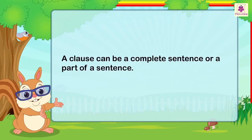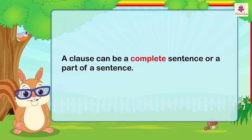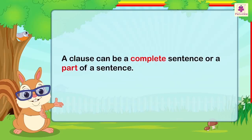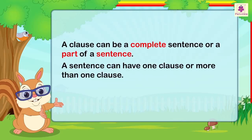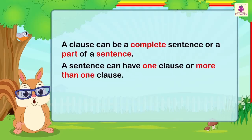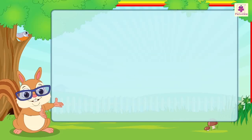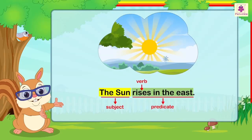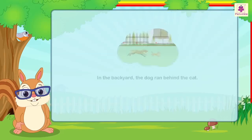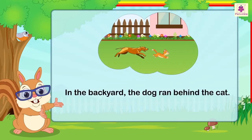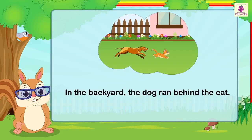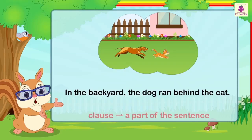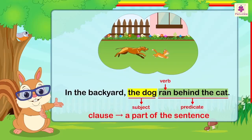A clause can be a complete sentence or a part of a sentence. A sentence can have one clause or more than one clause. For example, 'The sun rises in the east' — here, the clause is the complete sentence. 'In the backyard, the dog ran behind the cat' — here, the clause is a part of the sentence.